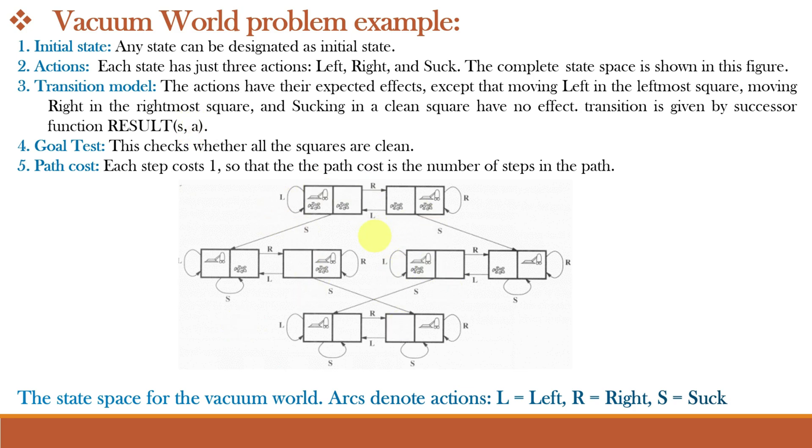Let us understand this state space. Let us assume that this is the initial state where the vacuum cleaner is in location A and both location A and B are dirty. Each state has just 3 actions left, right and suck. If it takes the left action, nothing will happen because it is already in the leftmost location. If it takes the move right action, then it will be in this state where the agent has moved to the room B. And if it sucks the dirt, then this will be the next state that will be achieved. Here we can see that location A has become clean and the successor function will be result of this state after action small a is action of suck will be this state and it will return this result and now this will be the new state.